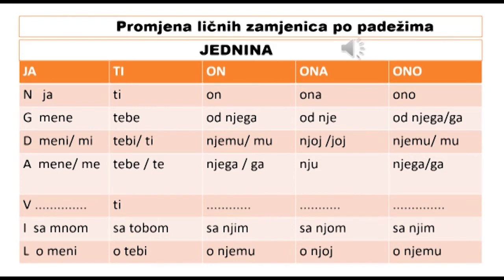Za zamjenicu on: nominativ ko – on; genitiv: od njega; dativ: njemu ili mu; akuzativ: vidim njega ili vidim ga; vokativ: nema, jer ne možemo zvati lice koje je odsutno; instrumental: sa njim; lokativ: o njemu.